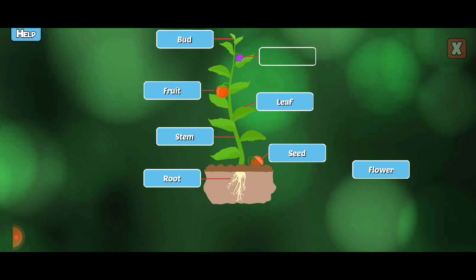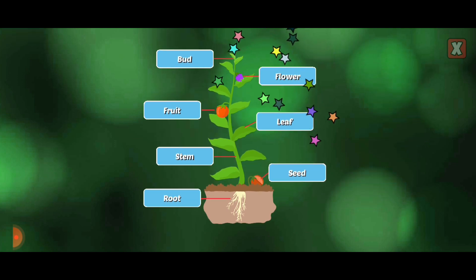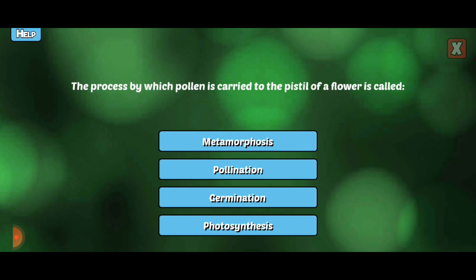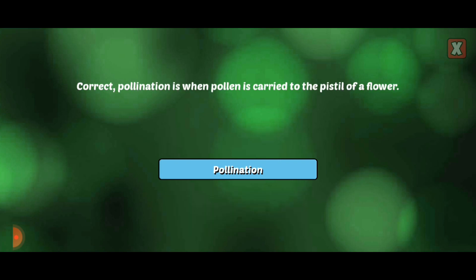Flower. Flowers attract pollinators, which helps in the reproductive process. You're right!